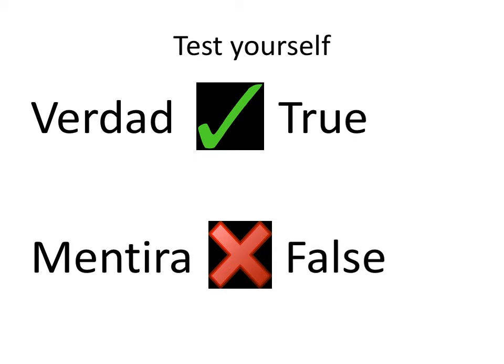Now we're going to play a game where you can test yourself to see how many of the verbs you can remember. The game we're going to play is Verdad o Mentira. This means true or false. Verdad means true. Mentira means false. You're going to see a picture and a verb underneath the picture. You need to decide whether the verb under the picture is true or false — whether it matches the picture or it doesn't. If it's true, you're going to say Verdad. If it's false, you're going to say Mentira.